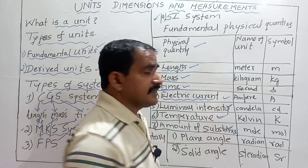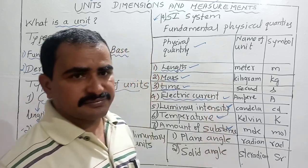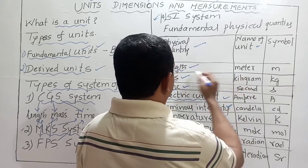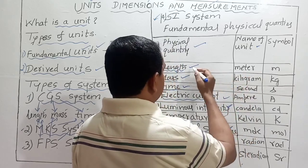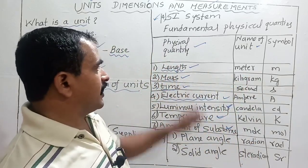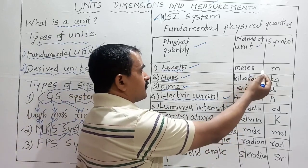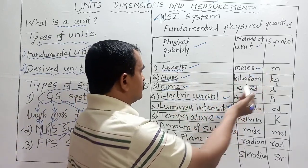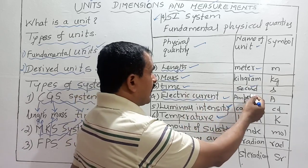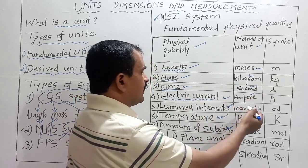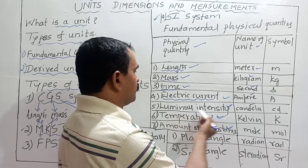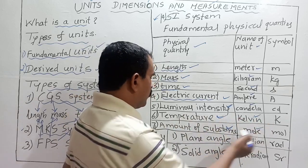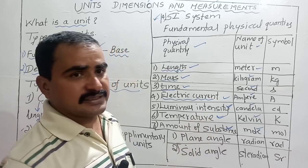For each base quantity there is a specific SI unit. Meter is the unit for length, kilogram for mass, second for time, ampere for electric current, candela for luminous intensity, kelvin for temperature, and mole for amount of substance.